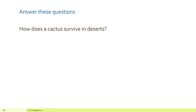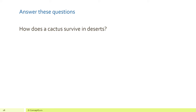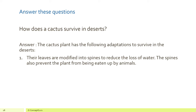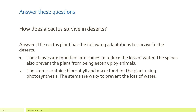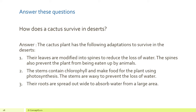How does a cactus survive in deserts? The cactus plant has the following adaptations: their leaves are modified into spines to reduce the loss of water, and the spines also prevent the plant from being eaten by animals. The stems contain chlorophyll and make food using photosynthesis. The stems are also waxy to prevent water loss. Their roots are spread out wide to absorb water from a large area.